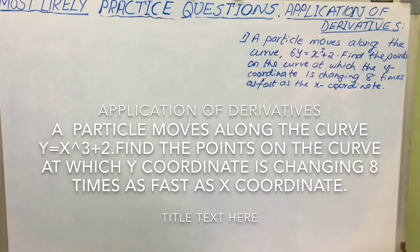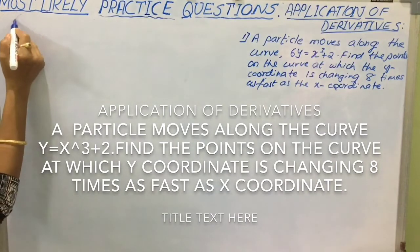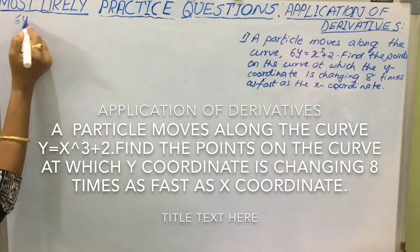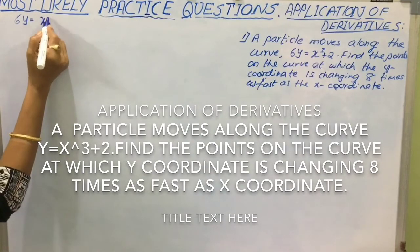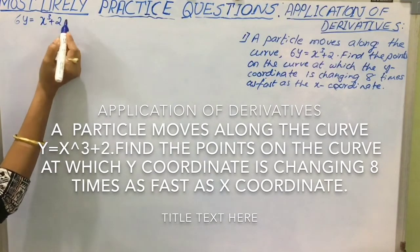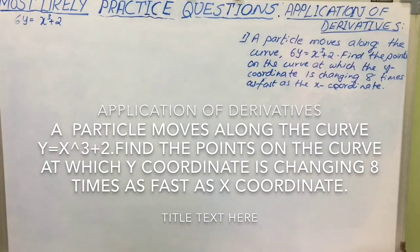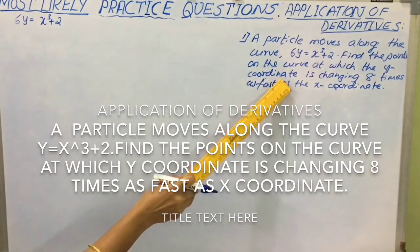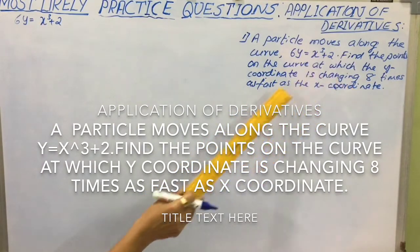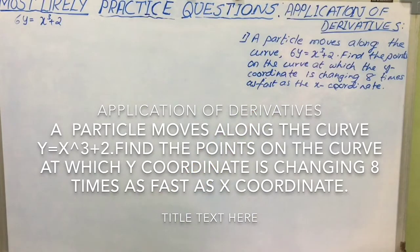Let us consider the solution of the same. Consider the given curve 6y equal to x cube plus 2. It is given that y coordinate is changing 8 times as fast as x coordinate.